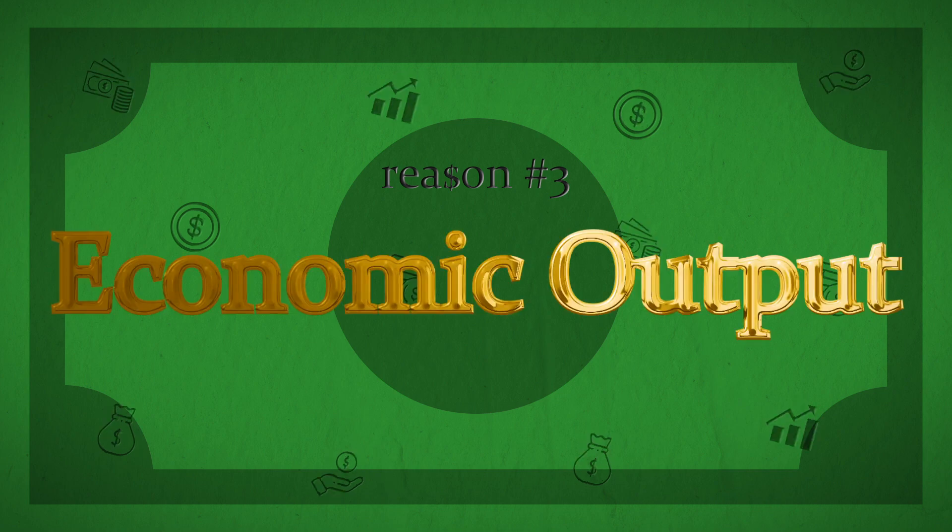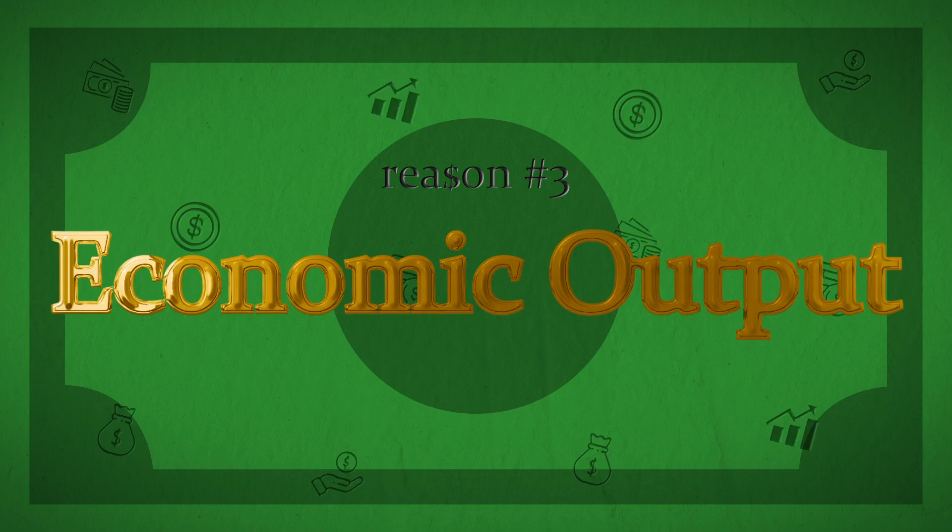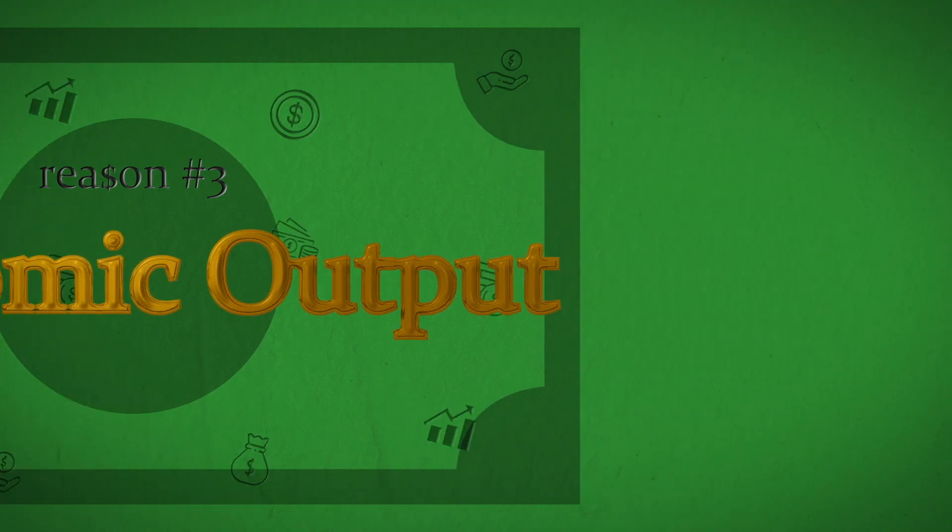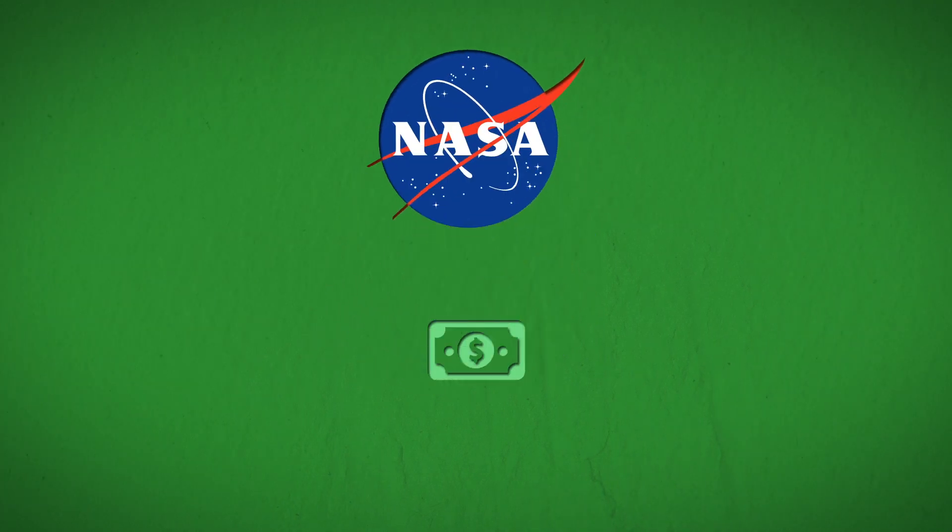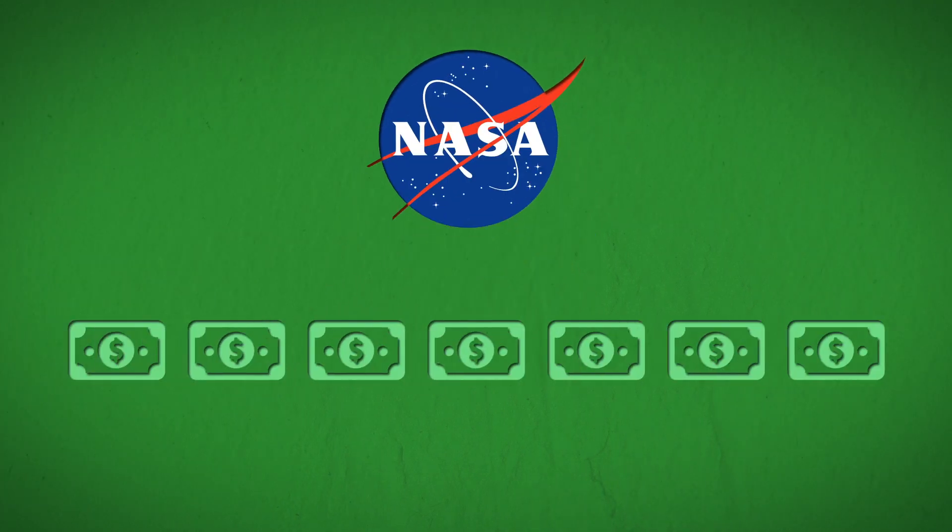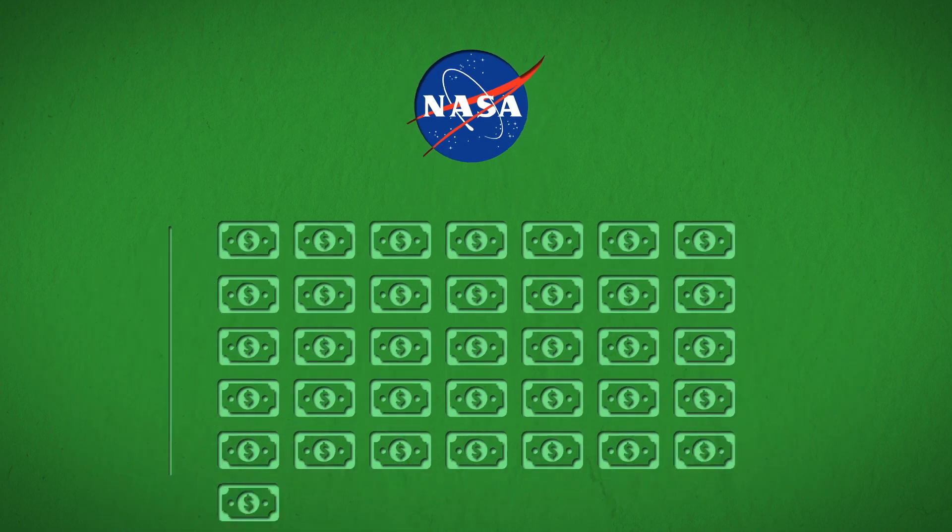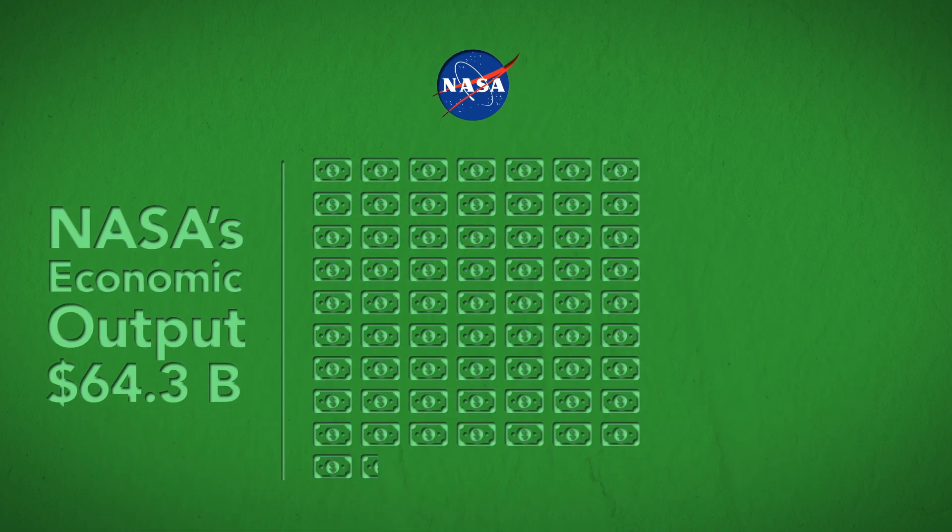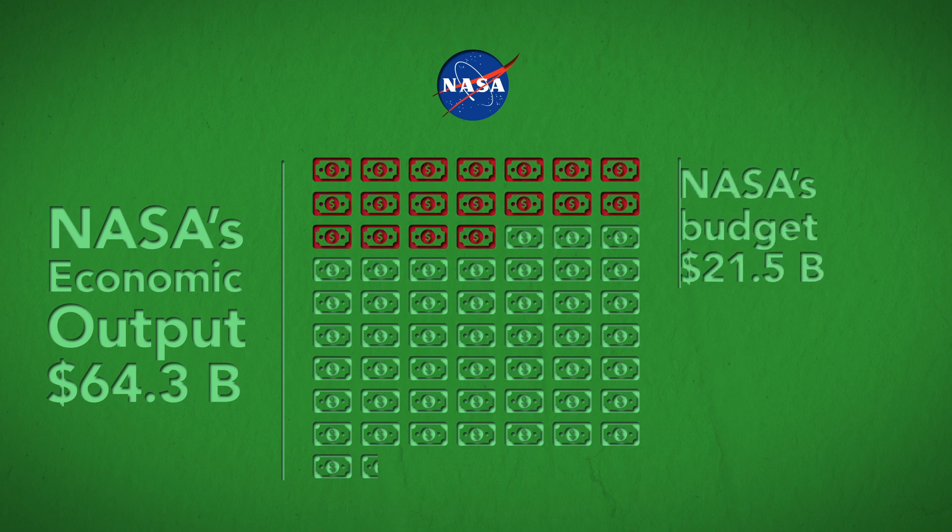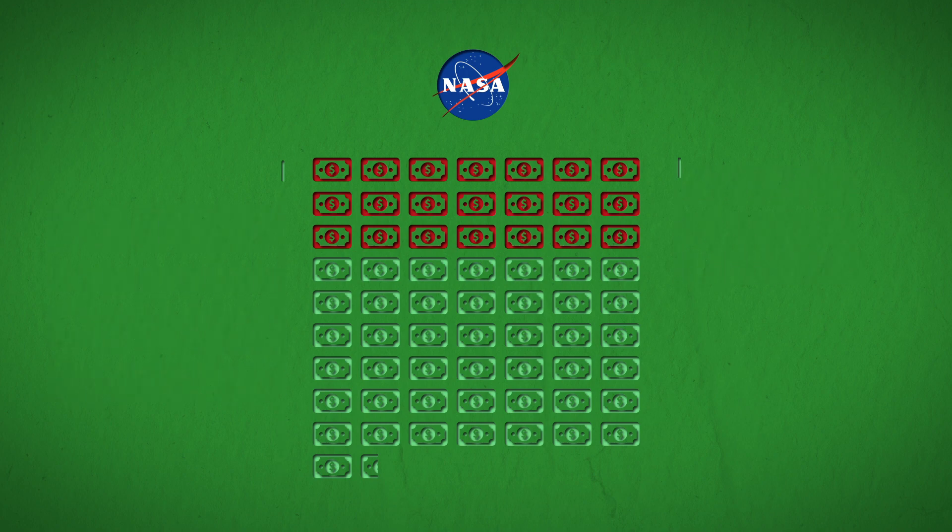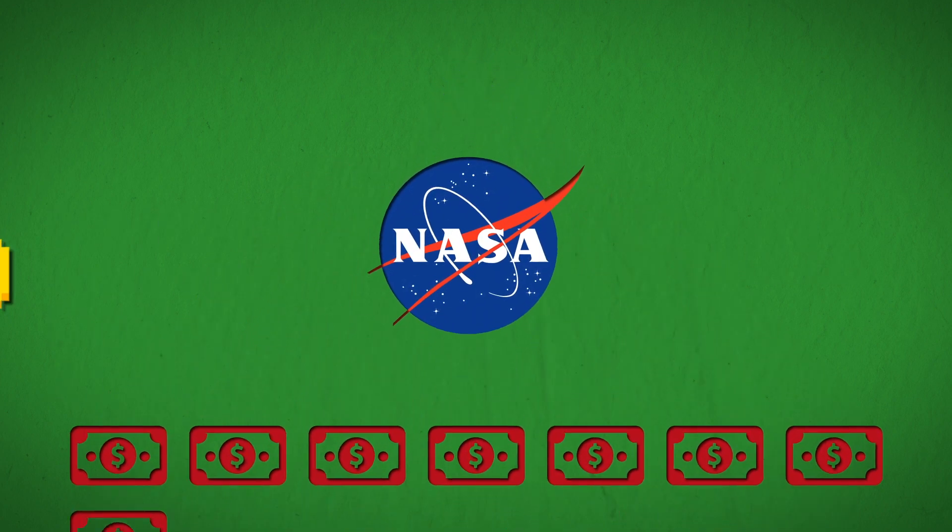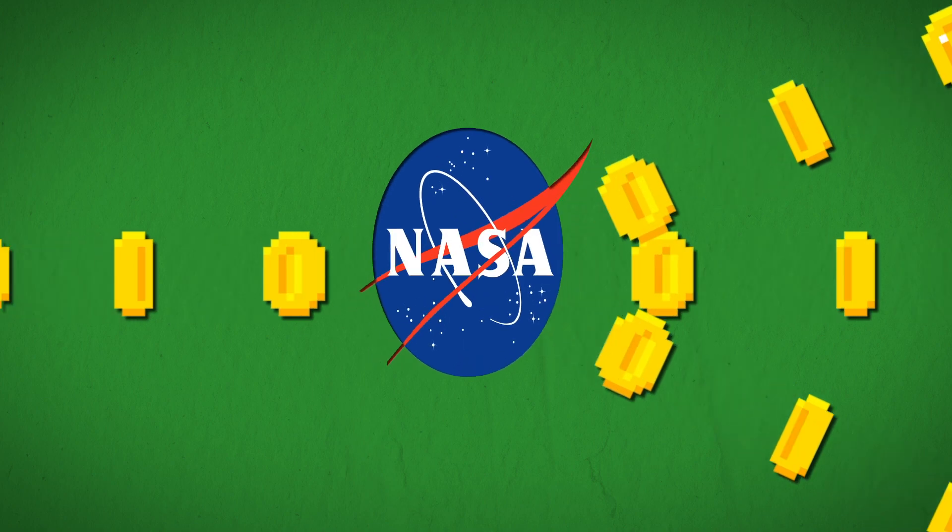Reason number 3. Economic output. Those high paying jobs are still giving back to the economy in general. And NASA generated an estimated 7 billion in taxes and had an economic output of more than 64.3 billion dollars. Which is incredible considering that, in 2019, the budget of NASA was 21.5 billion dollars. So basically, for every dollar put into it, NASA generated 3 more. Such a good output for a supposed waste of money.